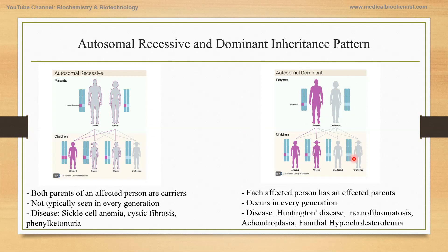Either a child can be unaffected with an unmutated allele, or an unaffected boy. And it can be an affected girl or affected boy, depending on the transmission of the mutant allele from the father to the boy or the girl. Therefore, each affected person has an affected parent, and it occurs in every generation. Diseases include Huntington's disease, neurofibromatosis, achondroplasia, and familial hypercholesterolemia.